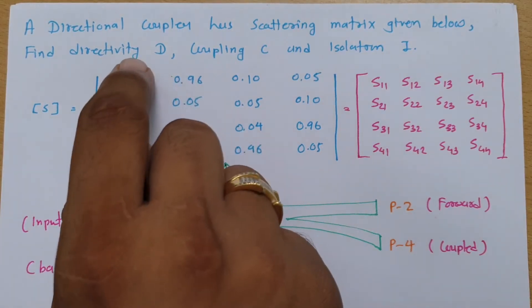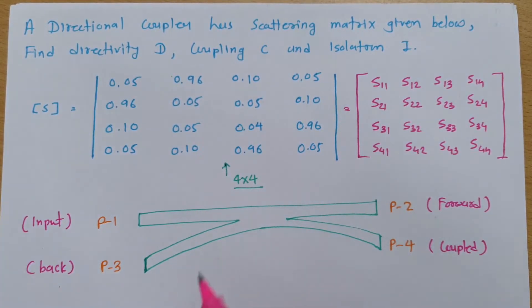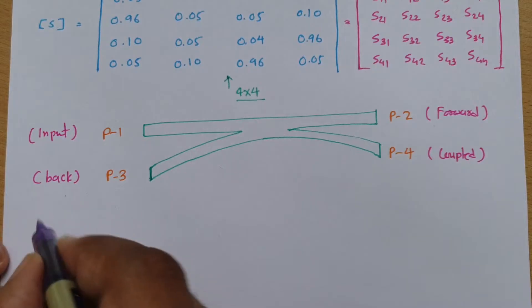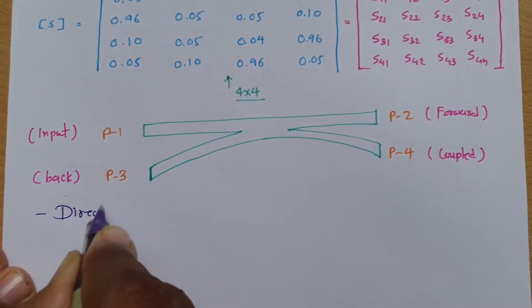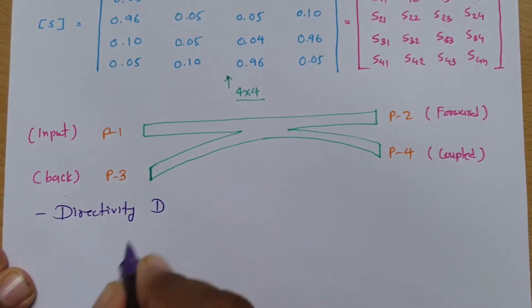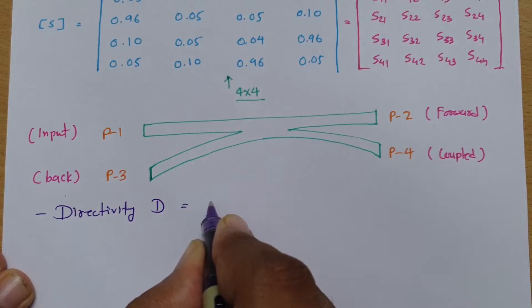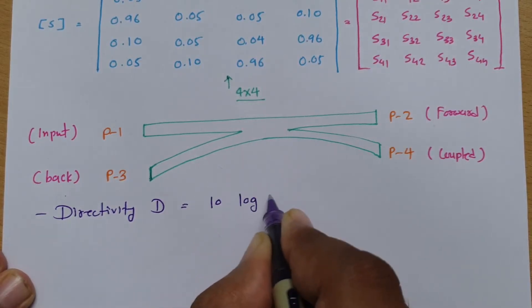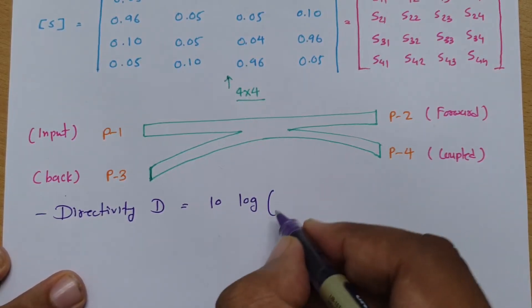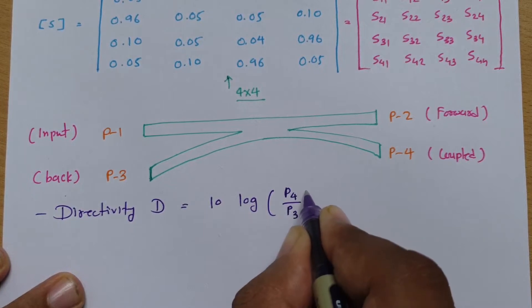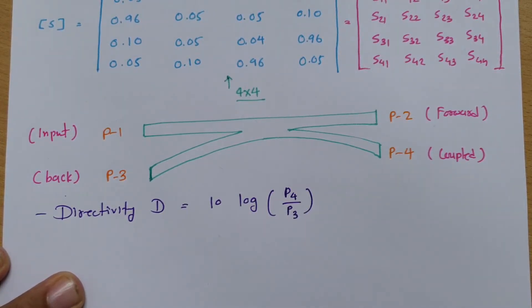Now we will solve this example. First, what is directivity? Directivity can be calculated as if we give input at port 3, what will be my output at port 4 - that will justify directivity. So directivity is 10 log of output power P4 divided by input power P3. This is my directivity.